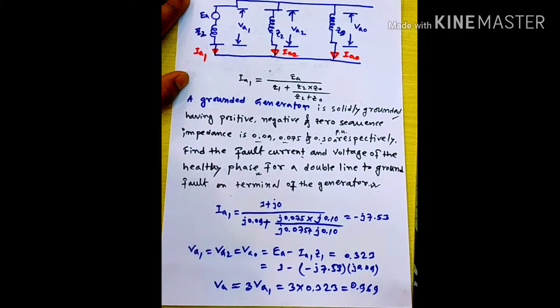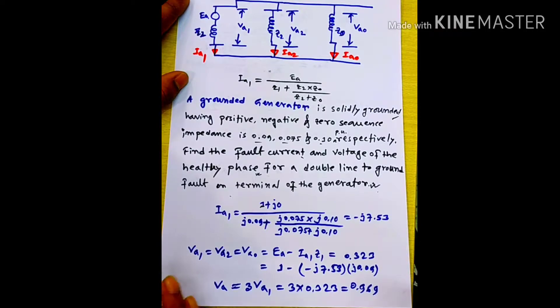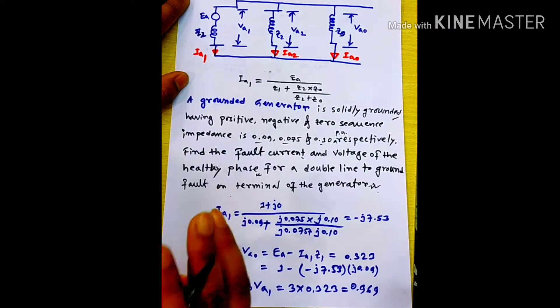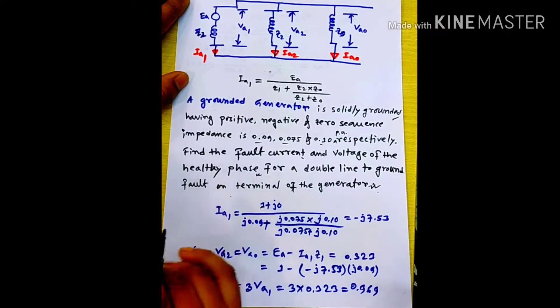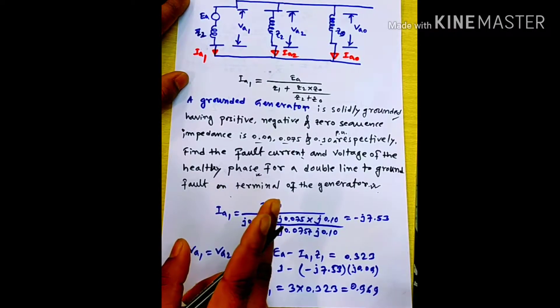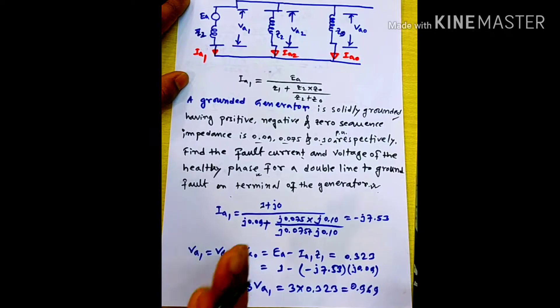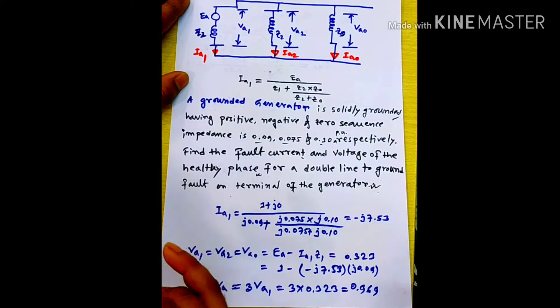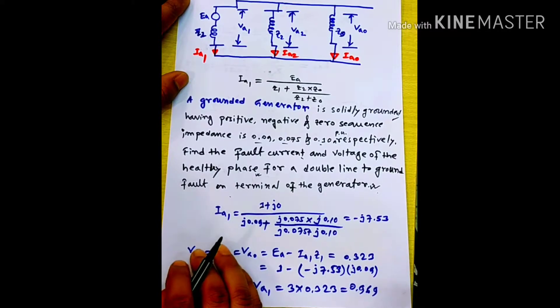There are symmetrical faults and unsymmetrical faults. There are three types of unsymmetrical faults: double line-to-ground faults, single line-to-ground faults, and line-to-line faults.